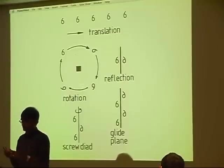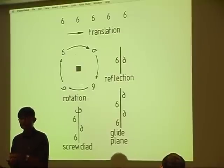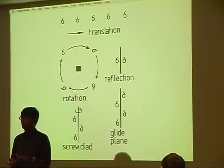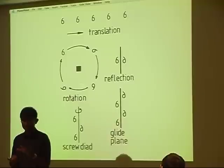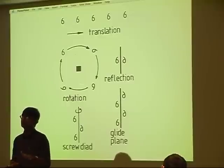But if the Burgers vector is not a lattice vector, then when slip happens, it will introduce a fault. So, for example, a Shockley partial is an a/6 [1,1,2] dislocation, and that's not a lattice vector. So whenever you get a Shockley partial moving through the lattice, you get a stacking fault left behind.